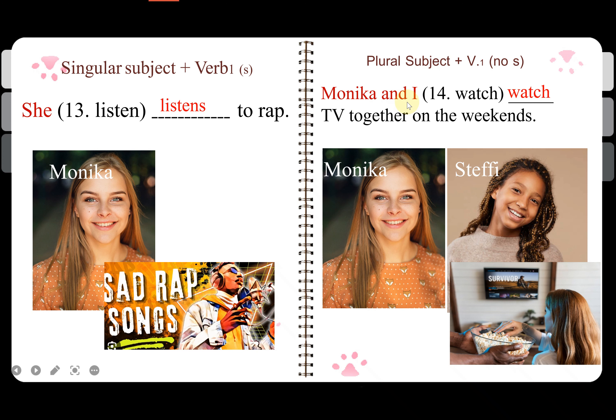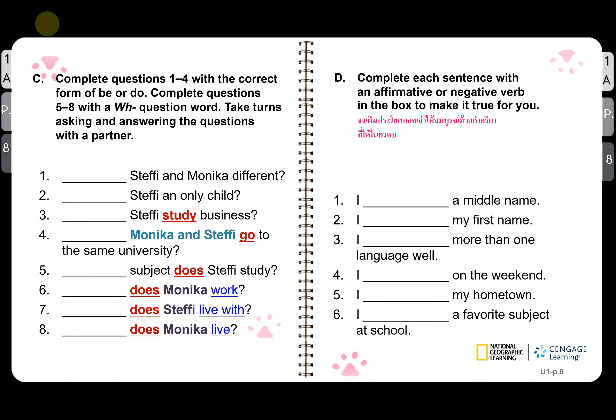Monika and I is plural, so don't add anything to the verb. Monika and I watch TV together on the weekends. Complete questions number one to four with the correct form of verb to be or verb to do. Then complete questions number five to eight with a WH question word.